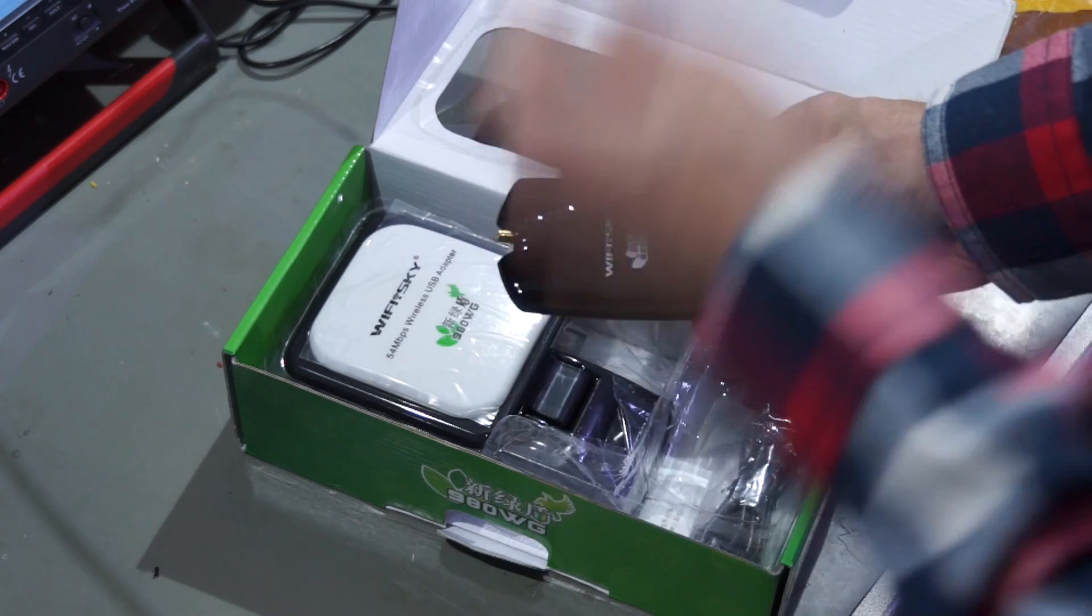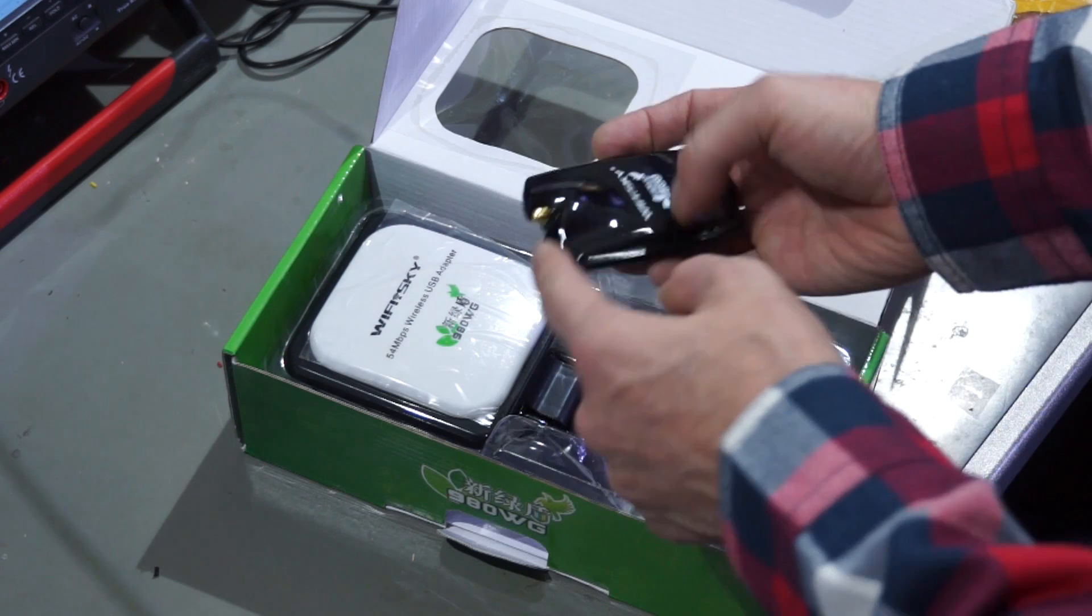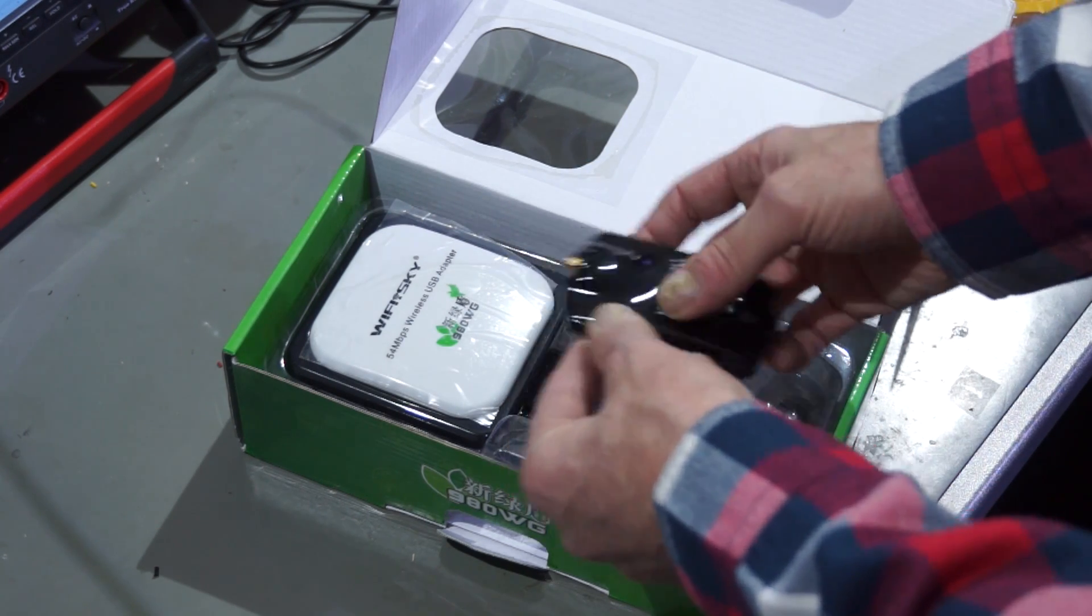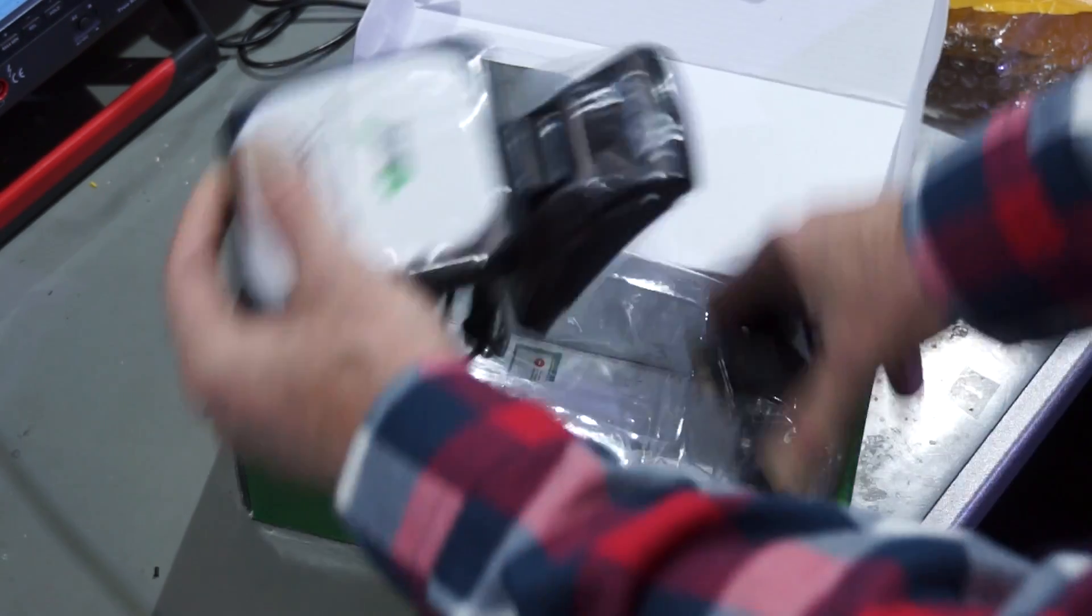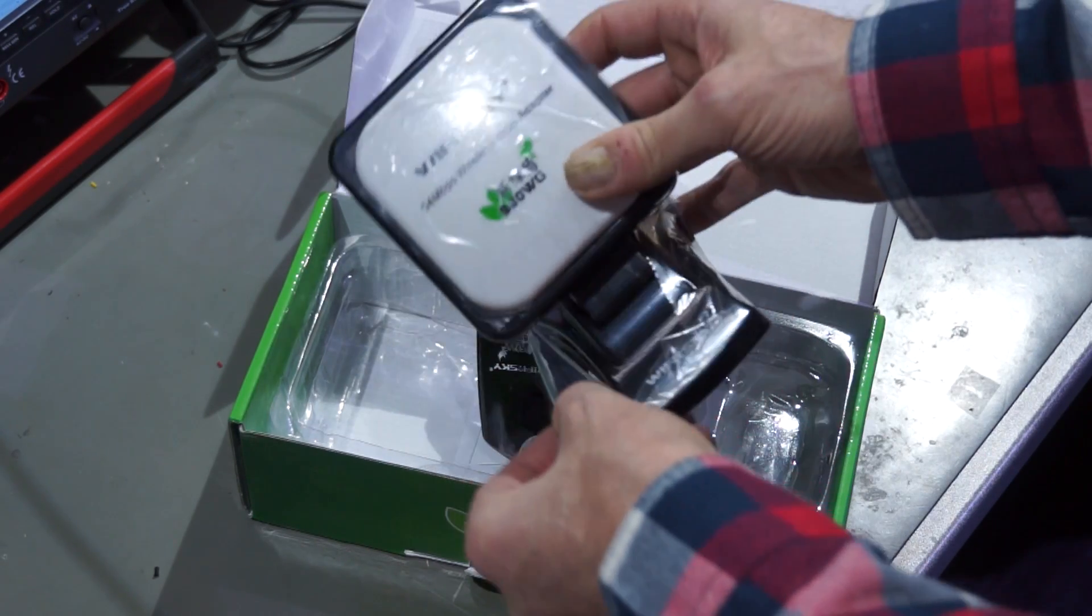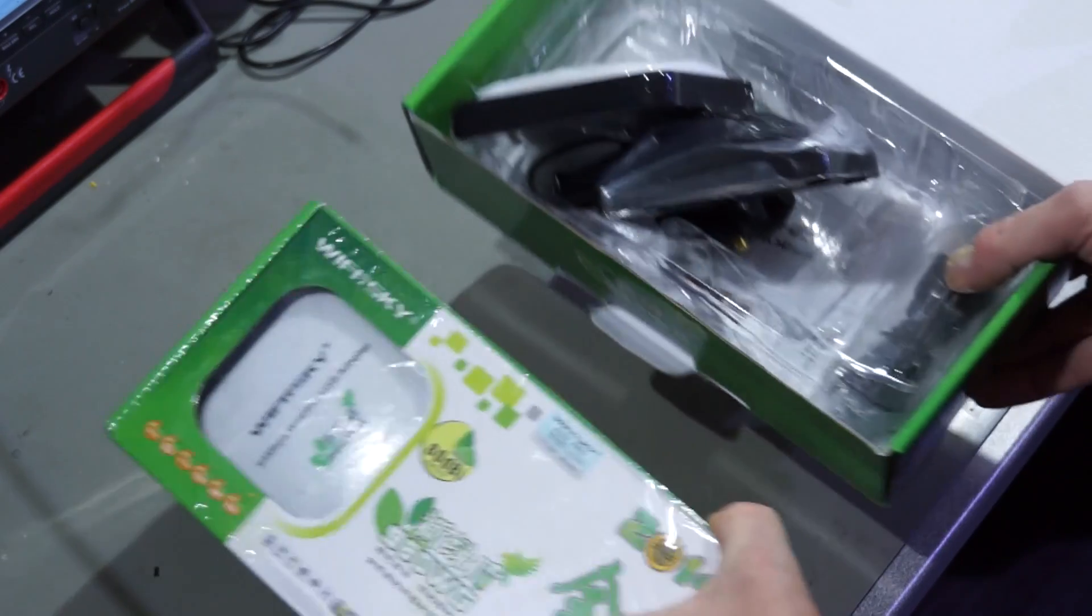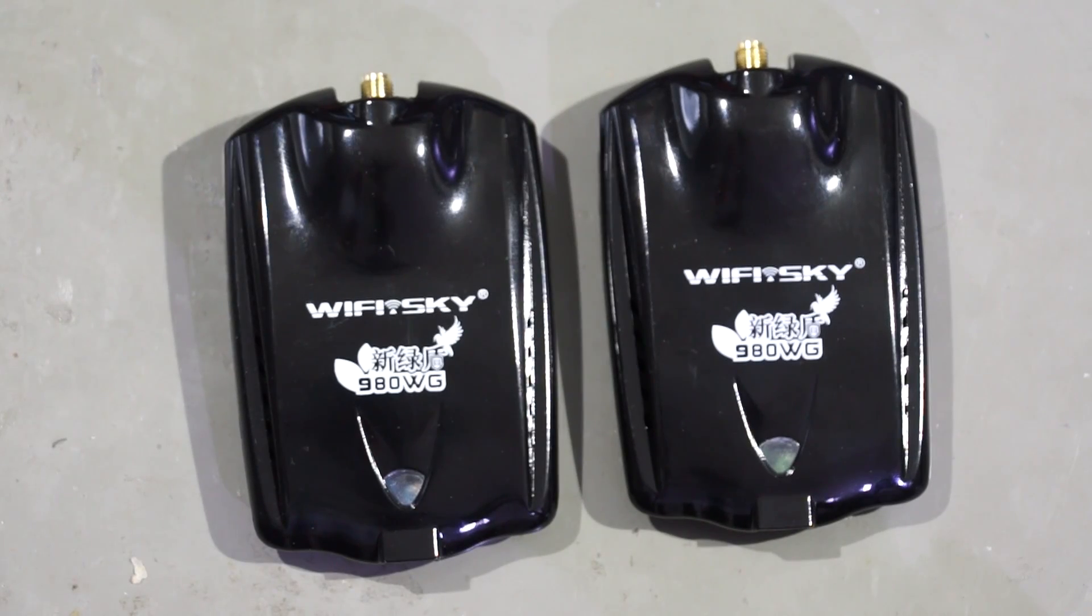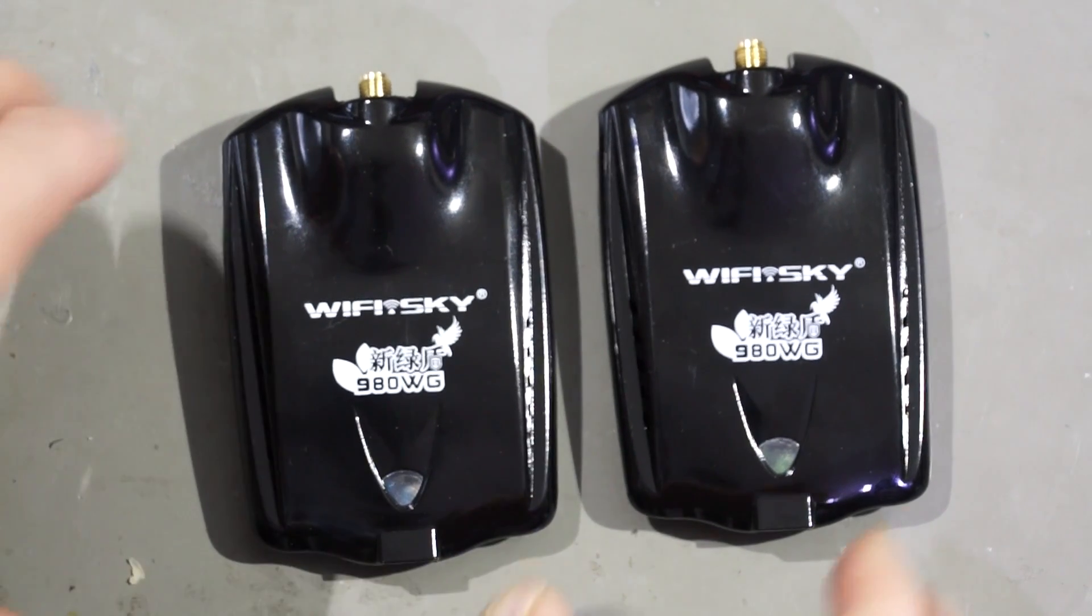Let's open up. These are small WiFi adapters. The advantage is they have a USB connector here and they have an SMA connector here. So I'm able to use also antennas with them. They come with an antenna. I'm not sure whether I will use this one. I might use other antennas. The second one is because I need two if I want to do tests. So these are the absolutely equal WiFi Sky 980 WG.